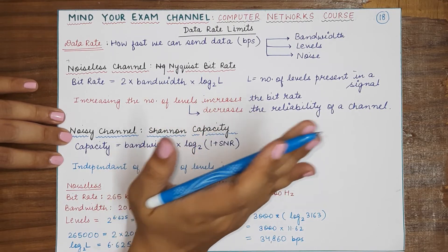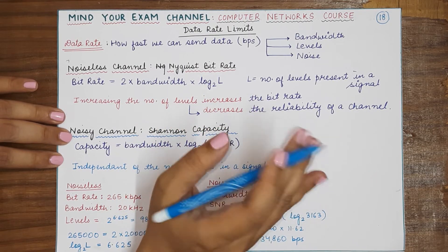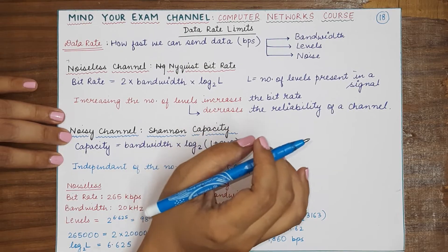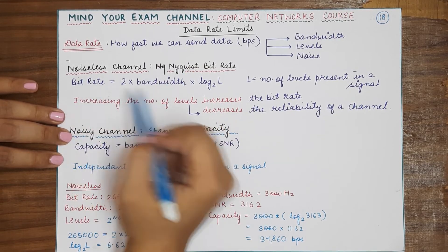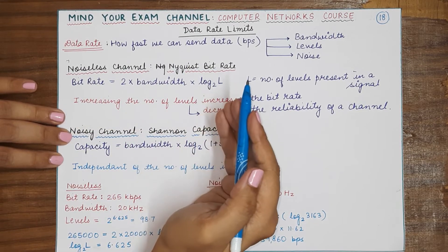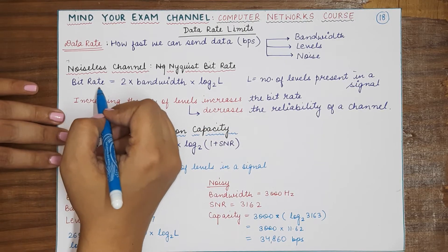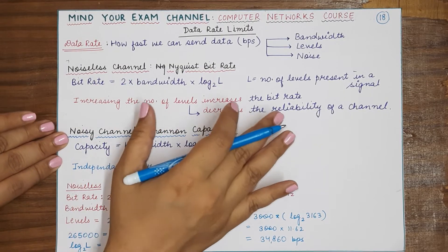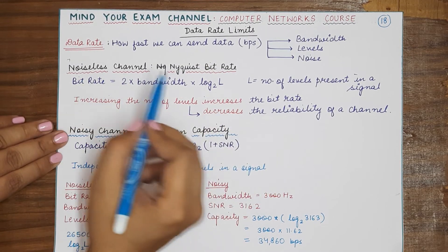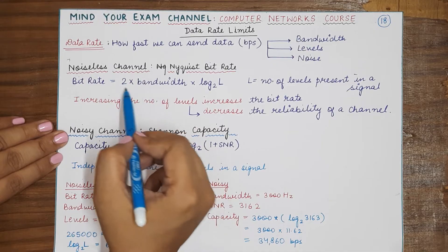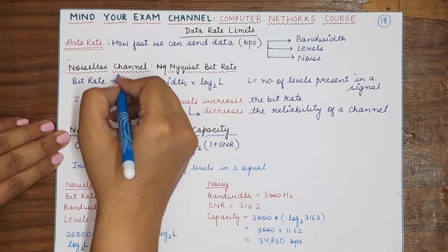Because in real life when you start increasing the number of levels and your bandwidth for a channel is fixed, your bit rate will also attain a value which will be not more than this particular value. It will be in most cases less than this theoretical maximum bit rate. But as long as you have to give your exams and you have to calculate the bit rate for noiseless channel, this is the formula that you will be applying: 2 × bandwidth × log of L base 2.